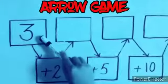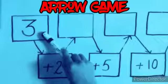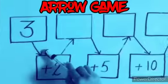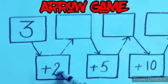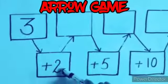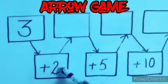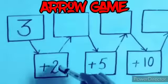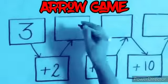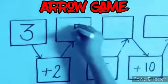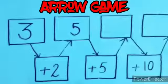Here we have 3 in the first row and one arrow going downward and showing the number plus 2. It means we have to add 3 and 2. 3 plus 2 is 5 and we have to write 5 in this row.